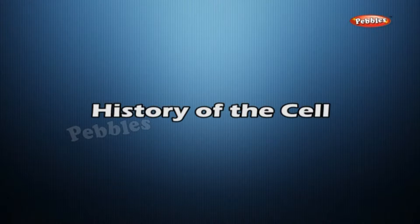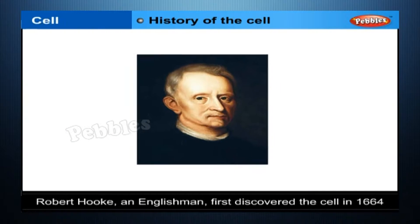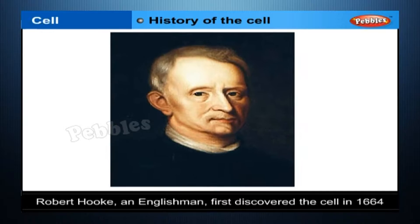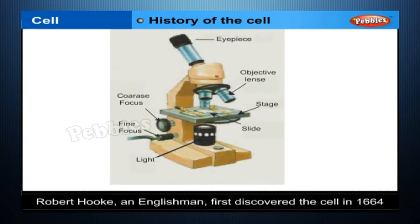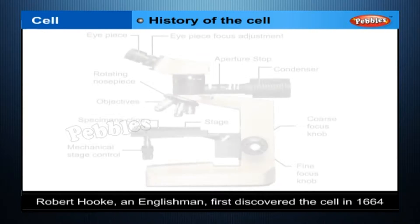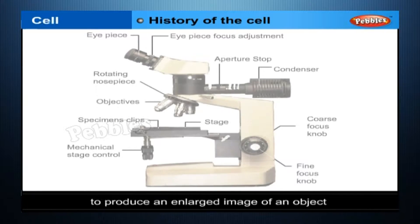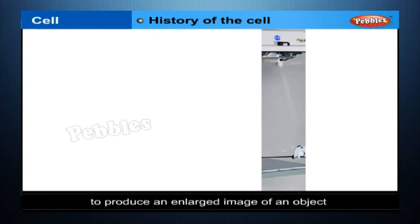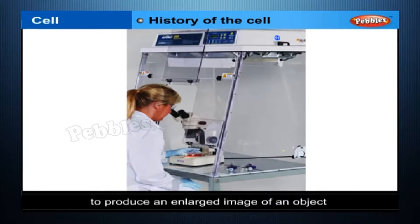History of the Cell. Robert Hooke, an Englishman, first discovered the cell in 1664 while examining a slice of cork under a microscope. A microscope is an instrument that is used to produce an enlarged image of an object. It was much later that scientists discovered that all living things are made up of cells.